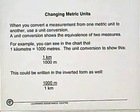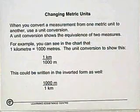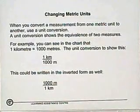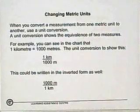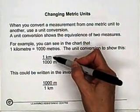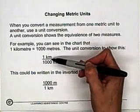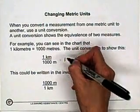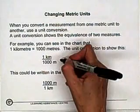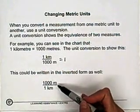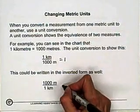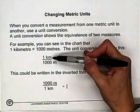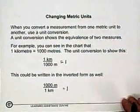When you convert a measurement from one metric unit to another, use a unit conversion. A unit conversion shows the equivalence of two measurements. For example, from the previous video where we showed the chart, we saw that one kilometer is equal to a thousand meters. Now you know that if you place equivalent values one on top of the other in fraction format, what you have is equal to one. You can also write this in the inverted form — a thousand meters is also equal to one kilometer. In both cases, this statement is telling you something that is equal to one. So that's a unit conversion where we show the equivalence of the two different ways of expressing that measurement.